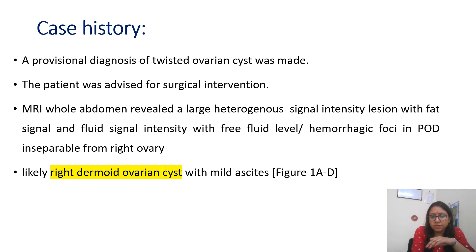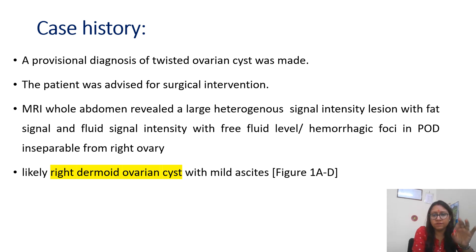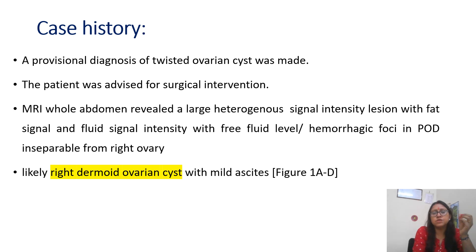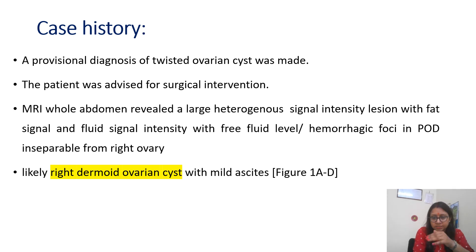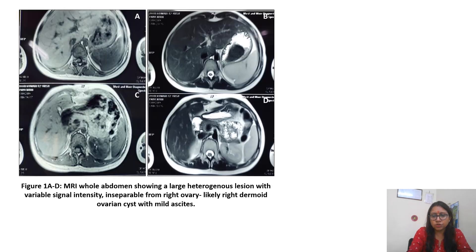MRI of the whole abdomen was done. It revealed a large heterogeneous signal intensity lesion with fat signal and fluid signal intensity, with free fluid level and hemorrhagic foci in the pouch of Douglas. This mass was inseparable from the right ovary, giving a clue that the origin of the mass is from the ovary. This was likely a right dermoid ovarian cyst with torsion, based on MRI findings.